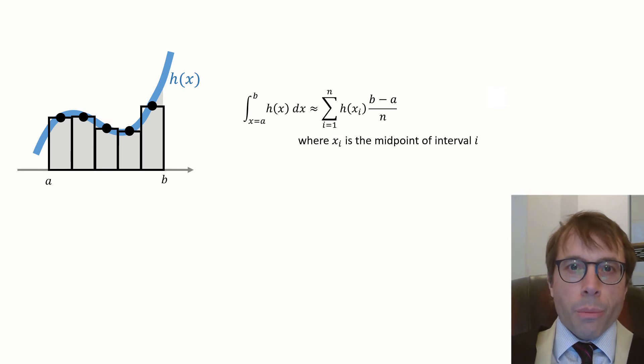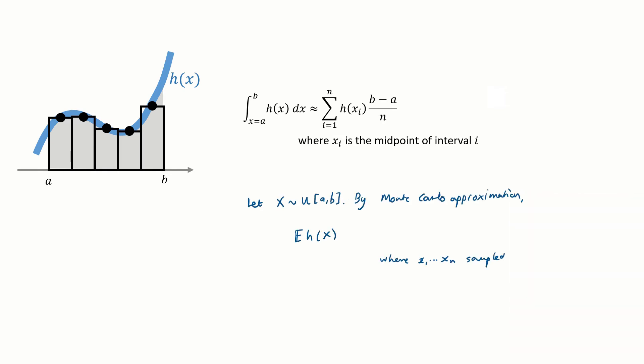Let's try to reframe this as a probability problem. I'm going to propose a random variable x uniformly distributed in the range a to b. The Monte Carlo approximation tells us the expected value of h of x can be approximated by the sample mean of h of little xᵢ, where the xᵢ's are samples from this uniform distribution. Let's just unpack the expectation. It's an integral, the integral of h of x times the probability density function, and because x is a simple uniform random variable, the pdf is just one on b minus a.